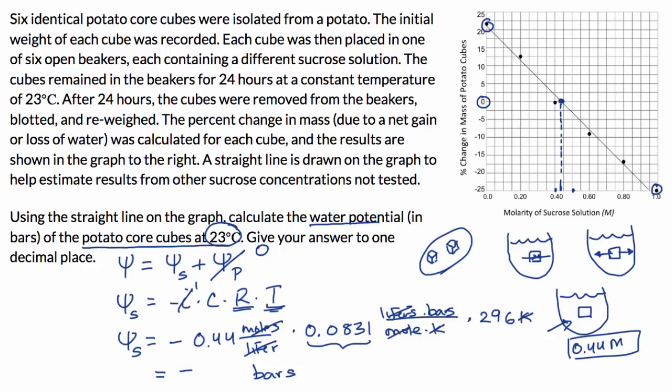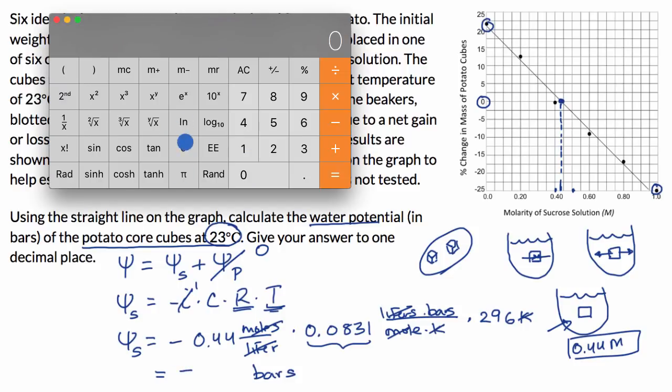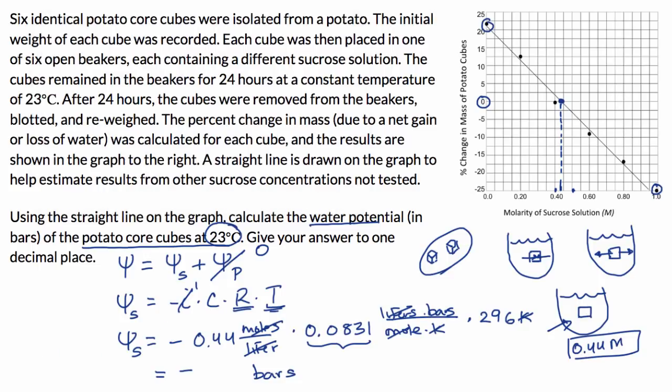And then we get the calculator out. So we have 0.44 times 0.0831 times 296 is equal to, and they want us to round our answer to one decimal place. So approximately 10.8. And we already had that negative out front. So negative 10.8 bars. And we're done.